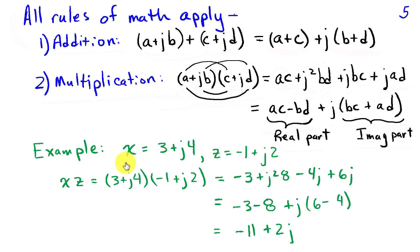If we do an example, let x = 3 + j4 and z = -1 + j2. The product of x and z is (3 + j4)(-1 + j2). We'll multiply all the various terms to get -3 + j²(2)(4), that's 8, -1 times j4, so -4j, plus 3 times 2j or 6j. Simplifying, j² is -1, so that's -3 - 8 + j(6 - 4). Combining these terms in the real and imaginary parts, we get -11 + 2j.